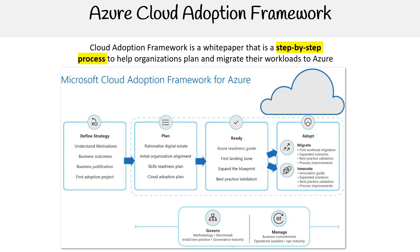Ready: this phase ensures preparedness. The Azure Readiness Guide prepares the environment for Azure. The first landing zone involves setting up an initial secure Azure environment. Expanding the blueprint means broadening the Azure setup as per requirements. Best practice validation ensures adherence to Azure best practices.